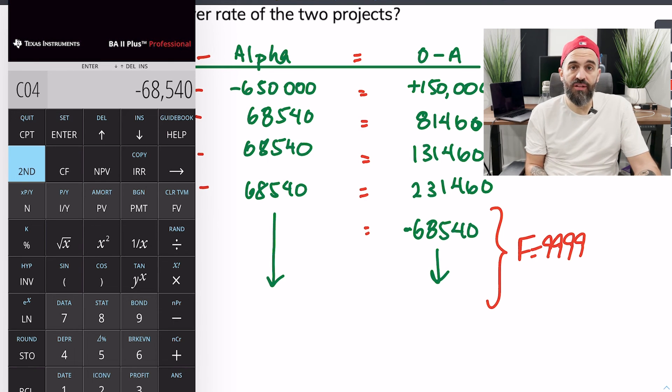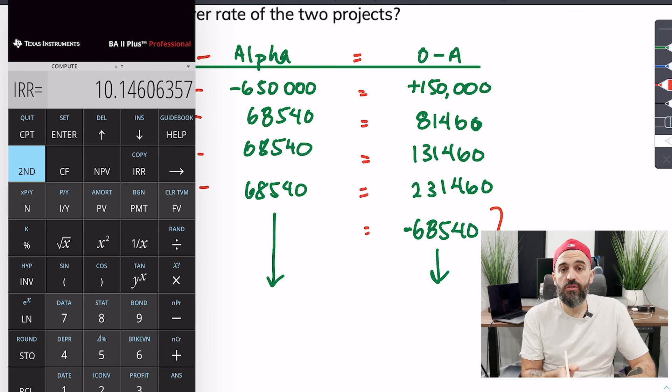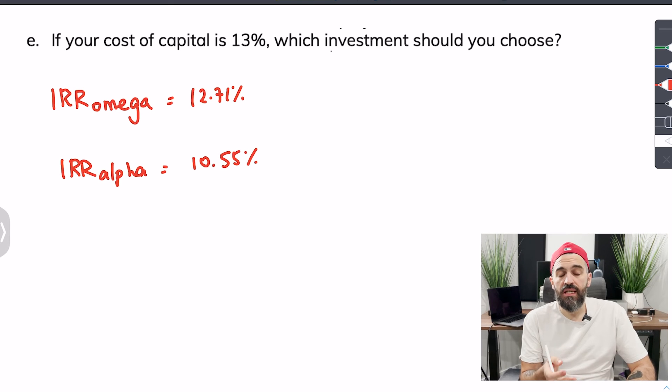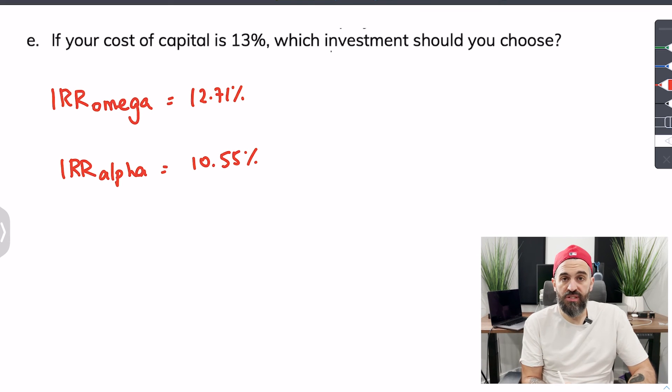The next question we've asked you which project should be invested in if the firm's cost of capital was 13%. The correct answer to this question is none, because if the cost of capital exceeds the internal rate of return of each project that means that neither one of these projects would be profitable at this rate.